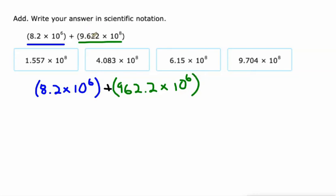Again, if you multiply this by 100, you have to divide the 10 to the eighth by 100. That's what I did. So now we have the same power of 10. 8.2 plus 962.2, that's 970.4. I can already see where my answer is. The only place I see that 9704 is right there, so that would be times 10 to the sixth.